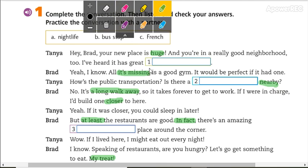We are going to check this vocabulary. This word, the meaning is 'inmenso,' 'gigante.' The pronunciation is 'huge.' 'It's missing' - all it's missing - 'todo lo que falta es.' 'Nearby,' 'nearby' - por aquí, cerca de aquí.